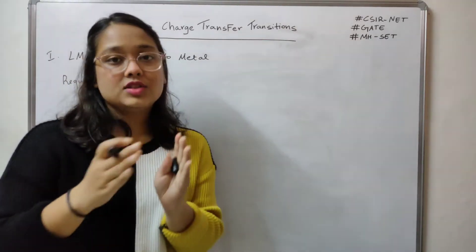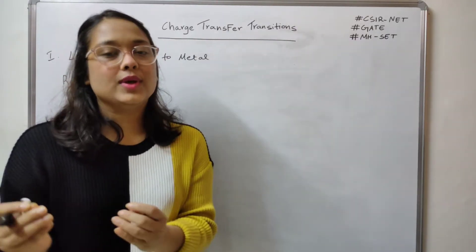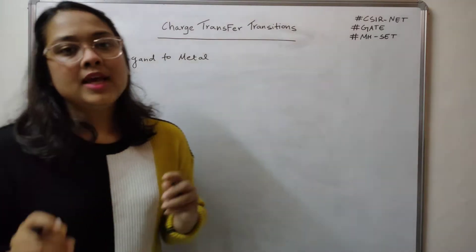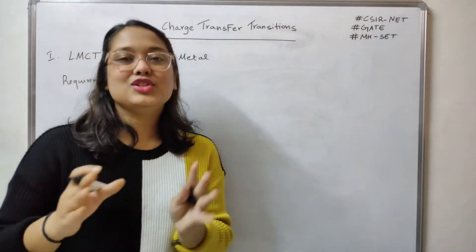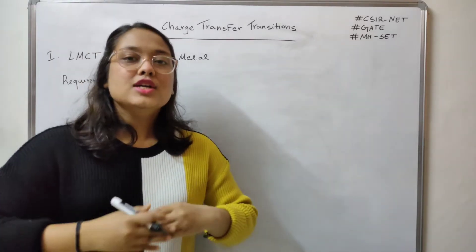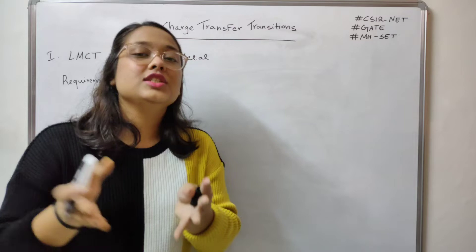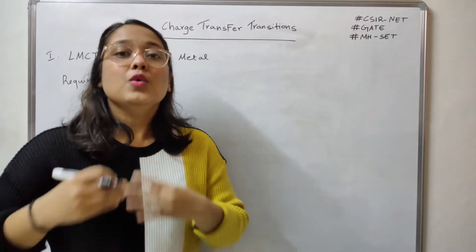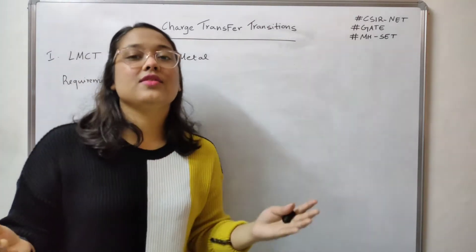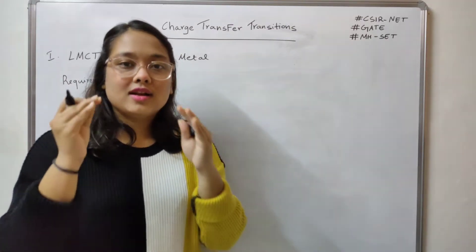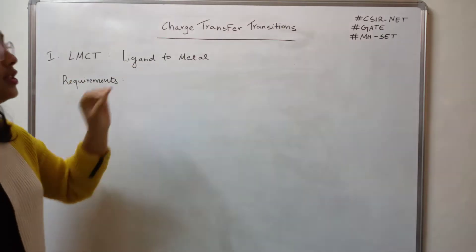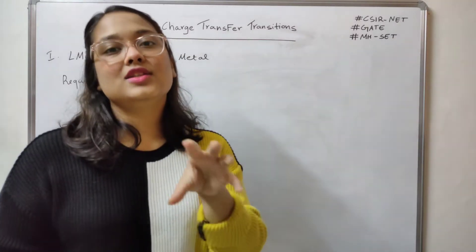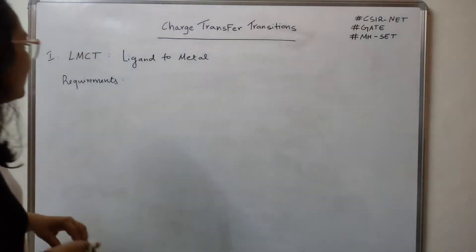Whenever you're studying these transitions, for every transition to occur there are a set of requirements. Once these requirements are fulfilled, you can assign which charge transfer transition is taking place. We have different metals and different ligands, and so many combinations are possible. So which particular complex will show LMCT? There are a few requirements to narrow this down.